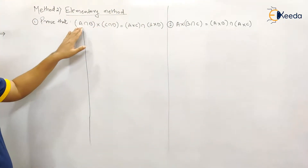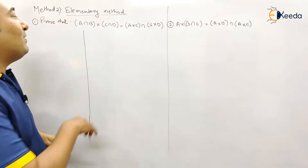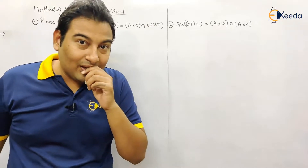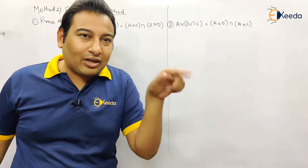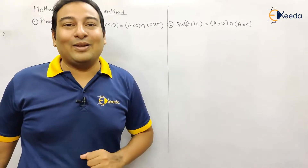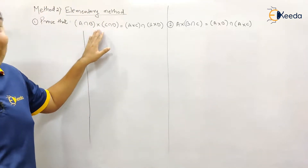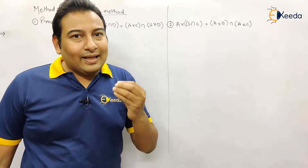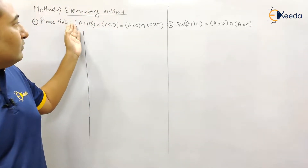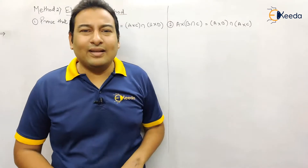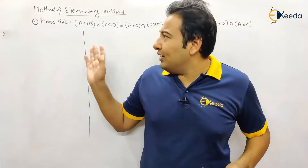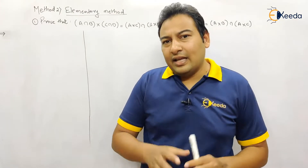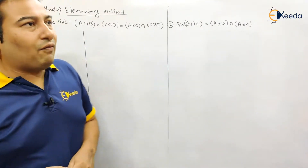For example, if you observe this problem, there is a cross — that is, a Cartesian product — which we have already discussed. How can you represent Cartesian product in a Venn diagram? In cases like this involving Cartesian product, and a few other similar examples, you need to prove using elementary method only. Here it is already specified: use elementary method. Now we'll go ahead with the elementary method.